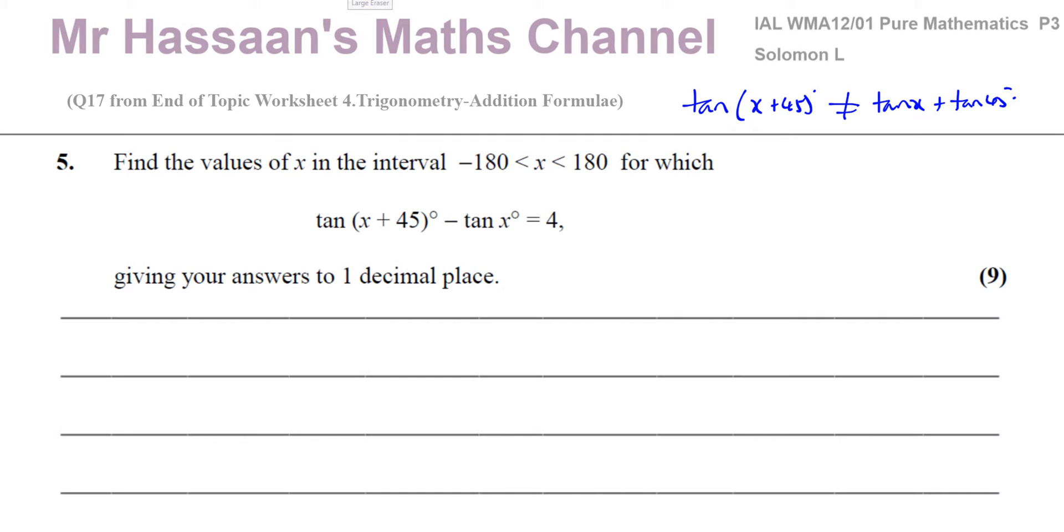Fortunately the addition formulae are in the formula book and there's one for tangent. We've just gone to the formula book and found it. Here it is. This is the formula that involves tan in the addition formulae, compound angle formulae. Now, here what it means is the tan of A plus B is equivalent to tan A plus tan B divided by 1 minus tan A times tan B. So if we translate this to what we have here, this is like the A and this is like the B, and there's a plus between them.